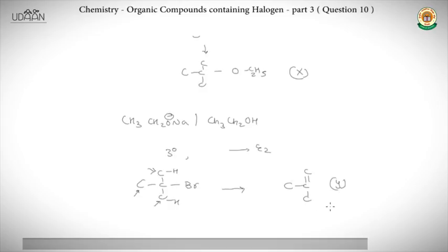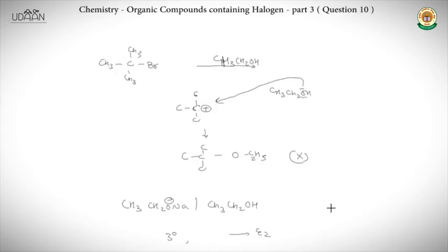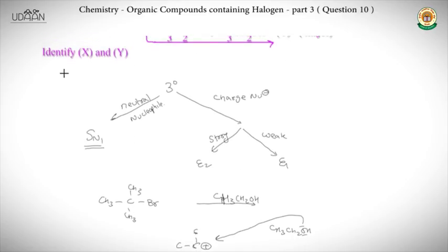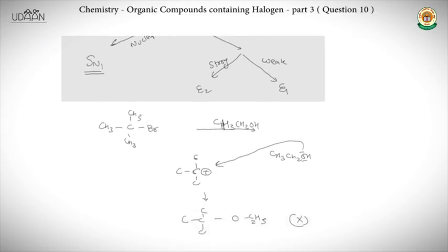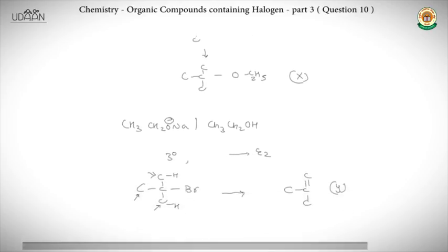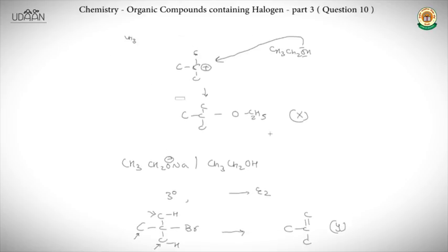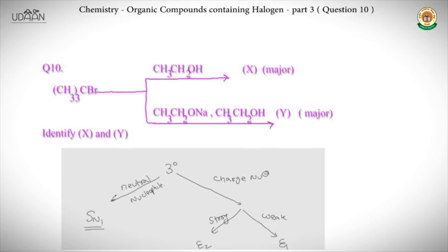Product Y — isobutene — is a stable alkene and is also a major product. In summary for question 10: the difference in products arises from the nature of the nucleophile. With neutral ethanol, SN1 occurs giving alcohol product X. With sodium ethoxide (strong nucleophile), E2 occurs giving alkene product Y. This was question 10.